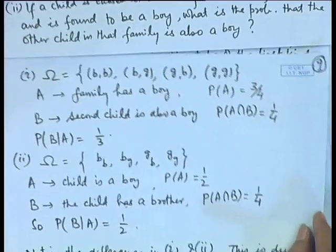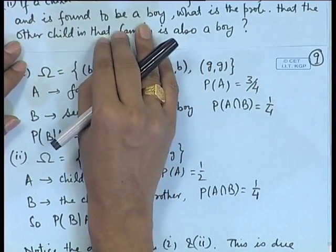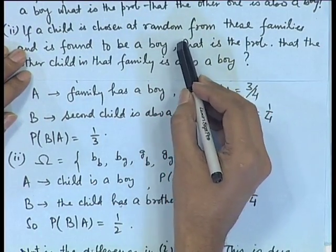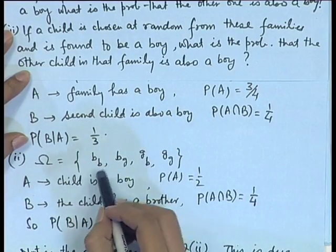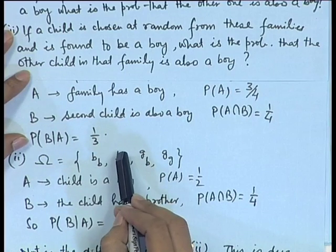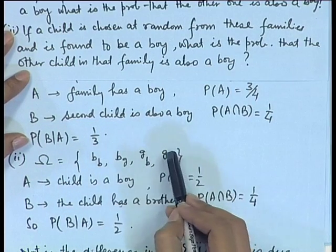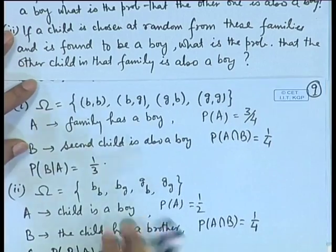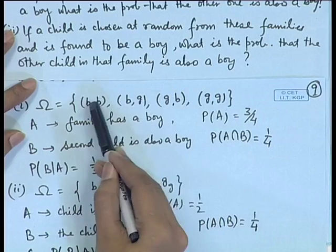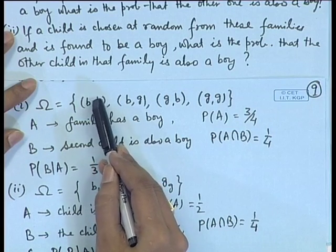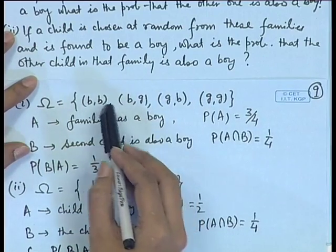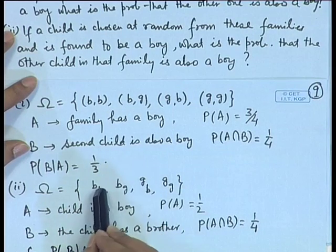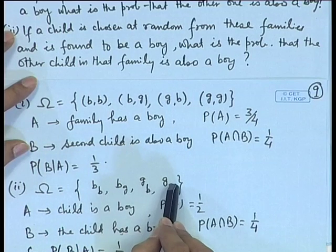In the second part, the sampling scheme is different. From the collection of all families, we choose a child at random. The child can be a boy with a brother, a boy with a sister, a girl with a boy, or a girl with a sister. The representation of the sample space is different here, because here we are choosing a child, not a family. So, the child may have a brother or sister.